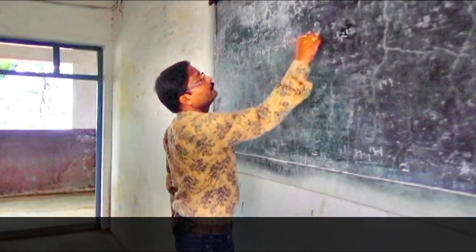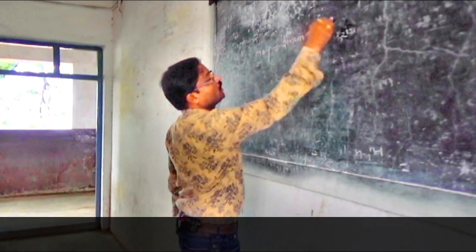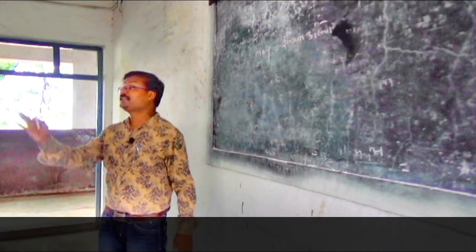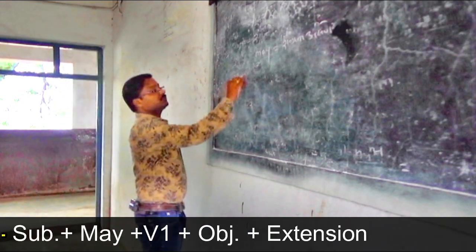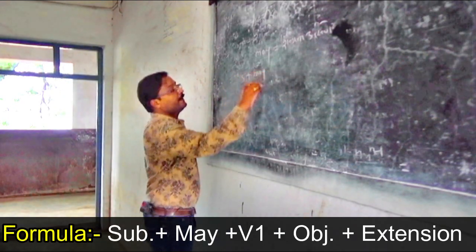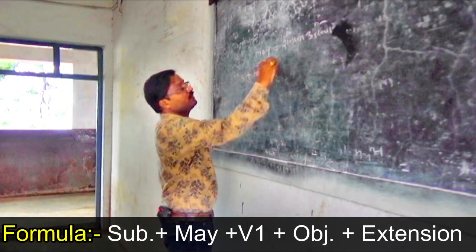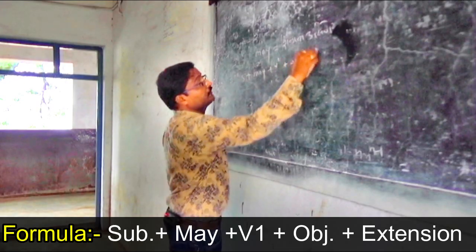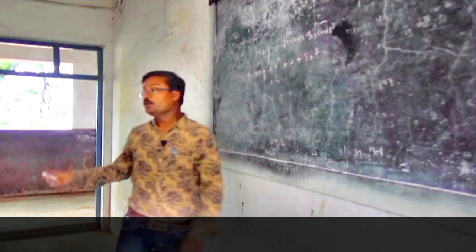Shakyata asne — having possibility — is the topic of 'may'. It is used for denoting only possibility, not guarantee. Construction is same: Subject plus may plus V1 plus object plus extension.